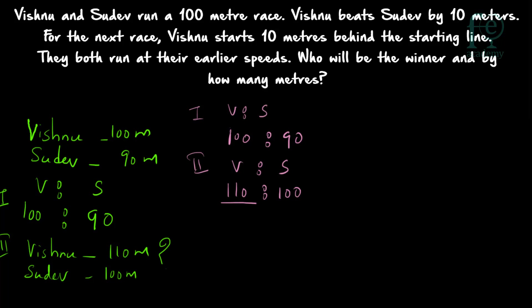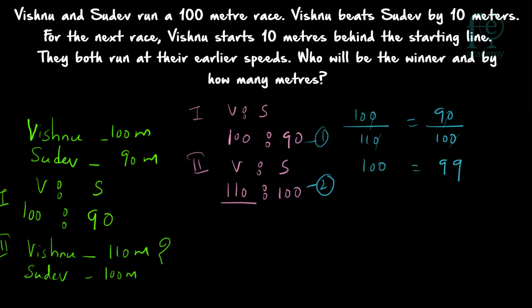The second race means whoever completes 100 meters first will be winning. So we write this as a cross ratio: 100 by 110 is equal to 90 by 100. In the first race, when Vishnu runs 100 meters, Sudev has completed only 90 meters. In the second race, when Vishnu has to run 110 meters, Sudev has to run only 100 meters. Cross-multiplying, we get 100 is equal to 99.